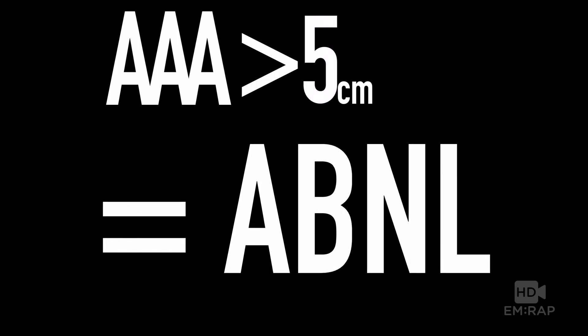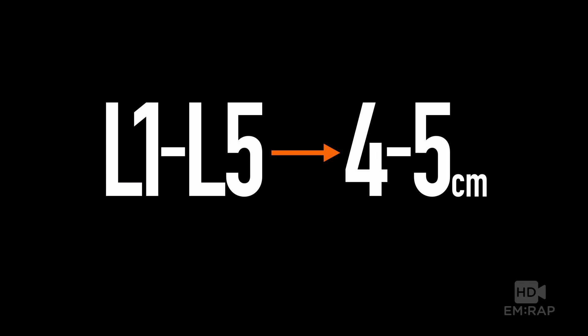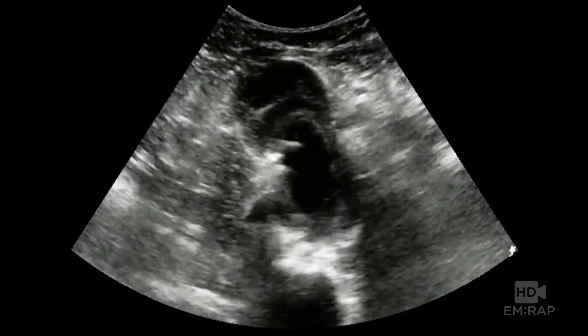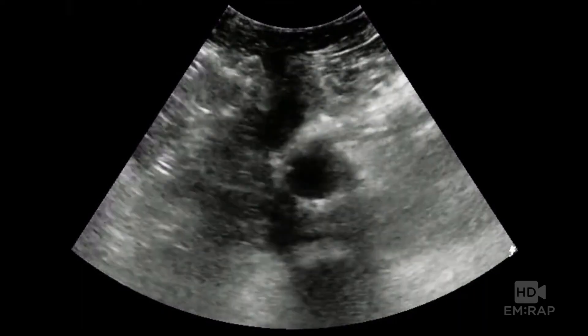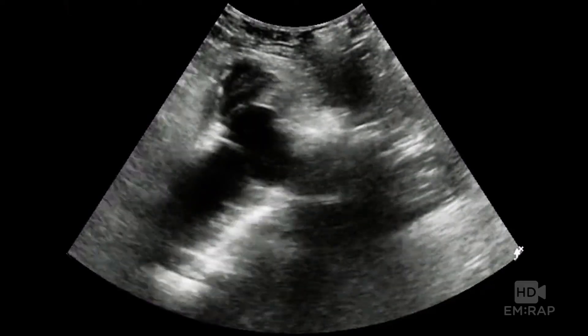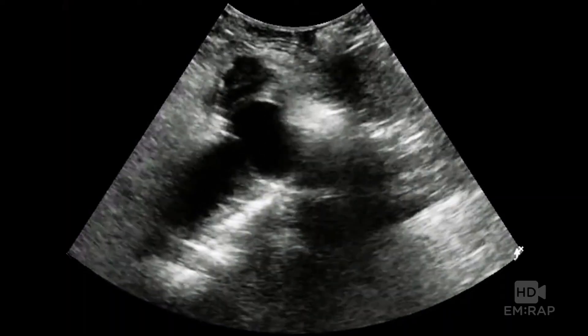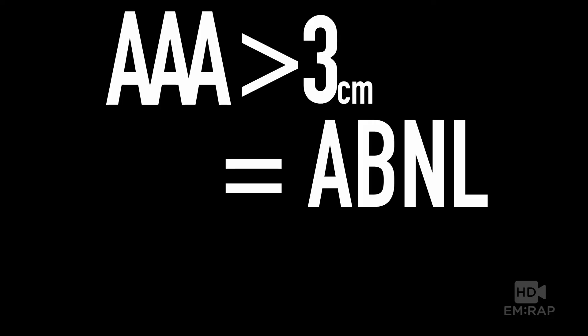Five centimeters is another number to remember — a triple A greater than five centimeters is more likely to be causing your patient's symptoms. You can also use the width of vertebral bodies to estimate aorta size: the average width at L1 through L5 is around four to five centimeters. Make sure to evaluate the entire aorta because there is a rarer form called a saccular aneurysm — a focal area of aneurysm — which is a good reason not to evaluate just one section. To recap: an AAA greater than three centimeters is abnormal; place the probe anteriorly, start at the epigastrium, and follow all the way down to the iliac bifurcation.